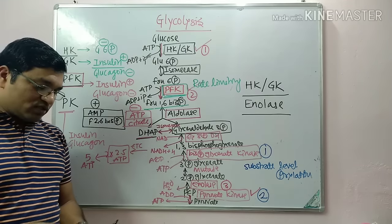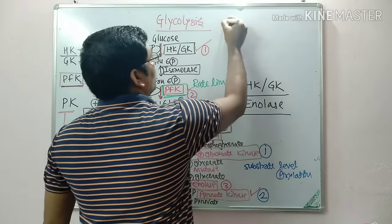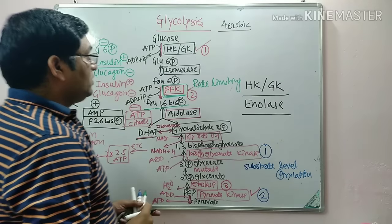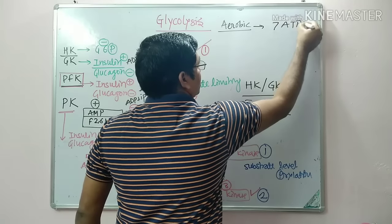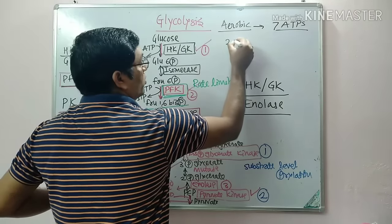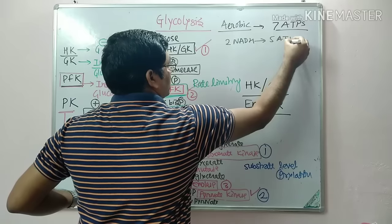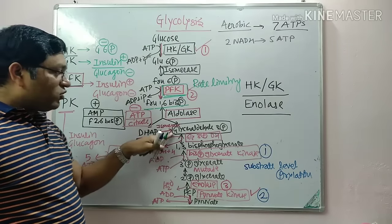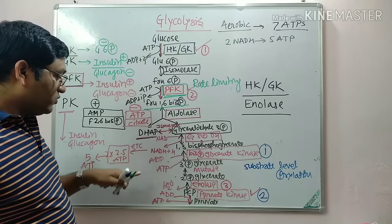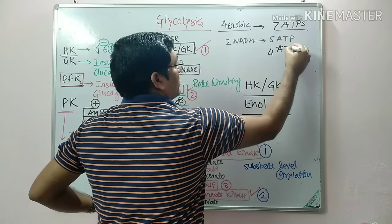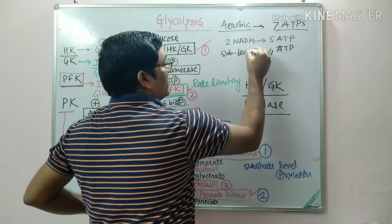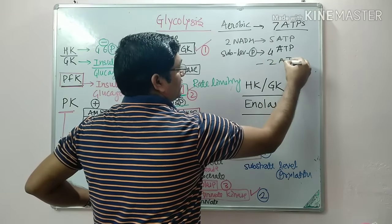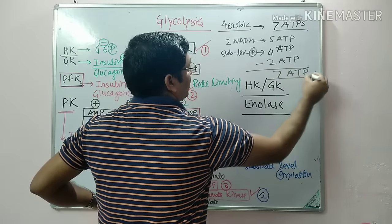Coming to the energetics of Glycolysis. When the pathway operates aerobically, there is generation of 7 ATPs. Two molecules of NADH are generated, yielding 5 ATP via oxidative phosphorylation. There are 2 substrate-level phosphorylation events producing 4 ATP total from 2 molecules of glyceraldehyde-3-phosphate. However, 2 ATPs are consumed in the investment phase (one at the Hexokinase step and one at the Phosphofructokinase step). Net result: 5 + 4 − 2 = 7 ATP aerobically.